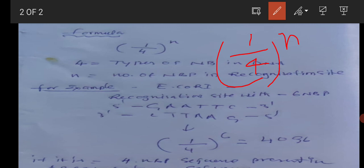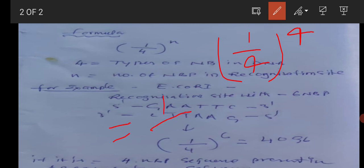So if we go through the formula, we know that n is four, so 1/4^4. Then the total recognition sequence would be 1/256. This is the answer.